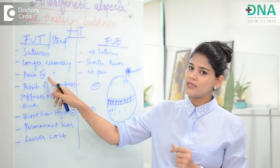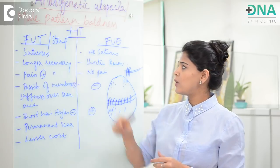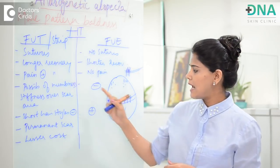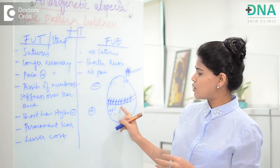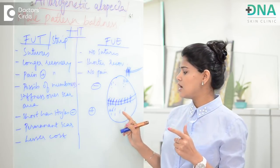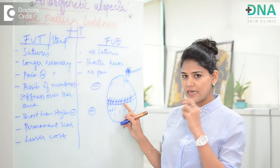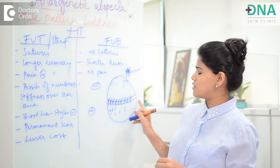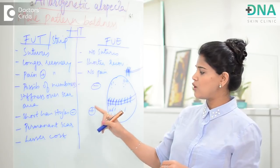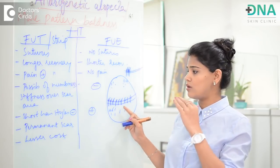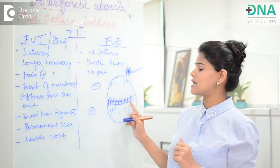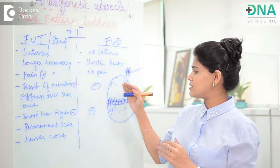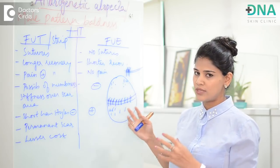Because of the sutures, there is also pain associated with FUT, while in FUE the recovery is seamless and doesn't involve any pain. And because of sutures, there is a possibility of the patient having numbness and stiffness of the neck and numbness of the treated area over the suture line for a long time. Also, because of the suture line, which is a permanent scar, the patient cannot have shorter hairstyles or go completely shaved. In FUE, however, shorter hairstyles are possible because the scars are not visible to the naked eye.